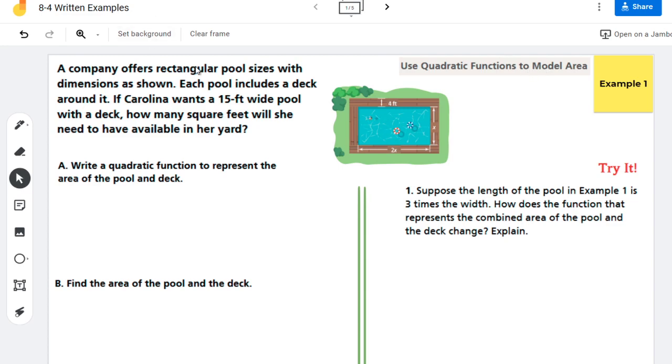So a company offers rectangular pool sizes with the dimensions as shown. Each pool includes a deck that goes around it. If Carolina wants a 15-foot-wide pool with a deck, how many square feet will she need to have available in her yard?